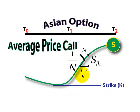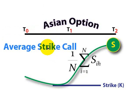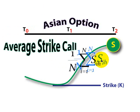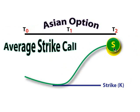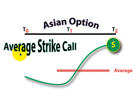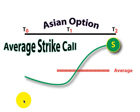Notice the average value here is arithmetic — we're using the arithmetic average of the spot price over the holding period, but we could also use a geometric average. That covers the average price call. We could also have an average strike call. In this case, instead of averaging the spot price, we average the strike price. So instead of a fixed strike price, the payoff of an average strike call is the spot price of the asset at expiration minus not a fixed strike price, but rather the average spot price of the asset over the holding period.